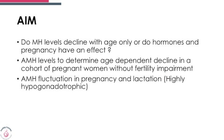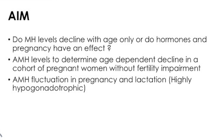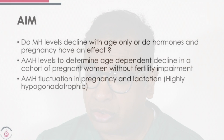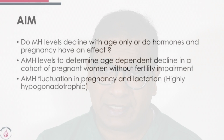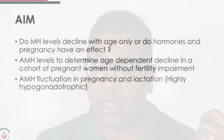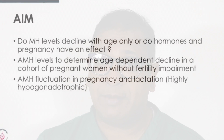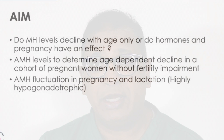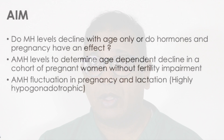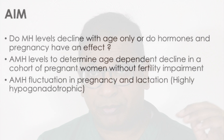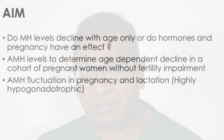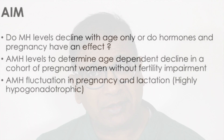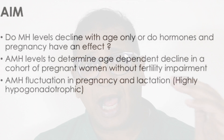What was the aim of this study? The aim was to determine whether AMH levels decline with age or whether hormones in pregnancy have an impact — specifically, to determine age-dependent decline in a cohort of pregnant women without fertility impairment, and to examine what happens to AMH through pregnancy and postpartum. Remember, pregnancy is probably the most profound hypogonadotrophic phase that a woman passes through in her childbearing years.